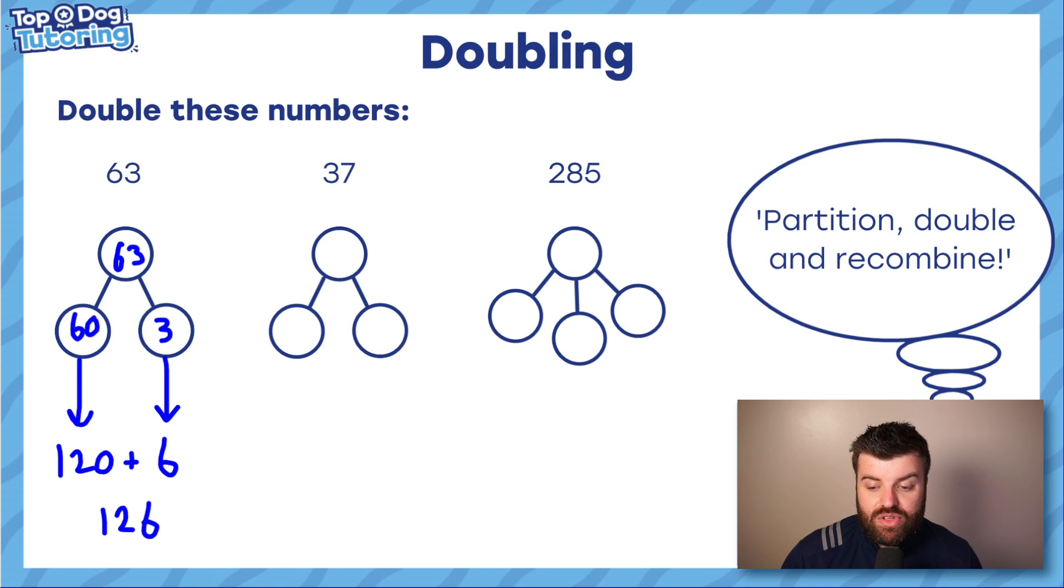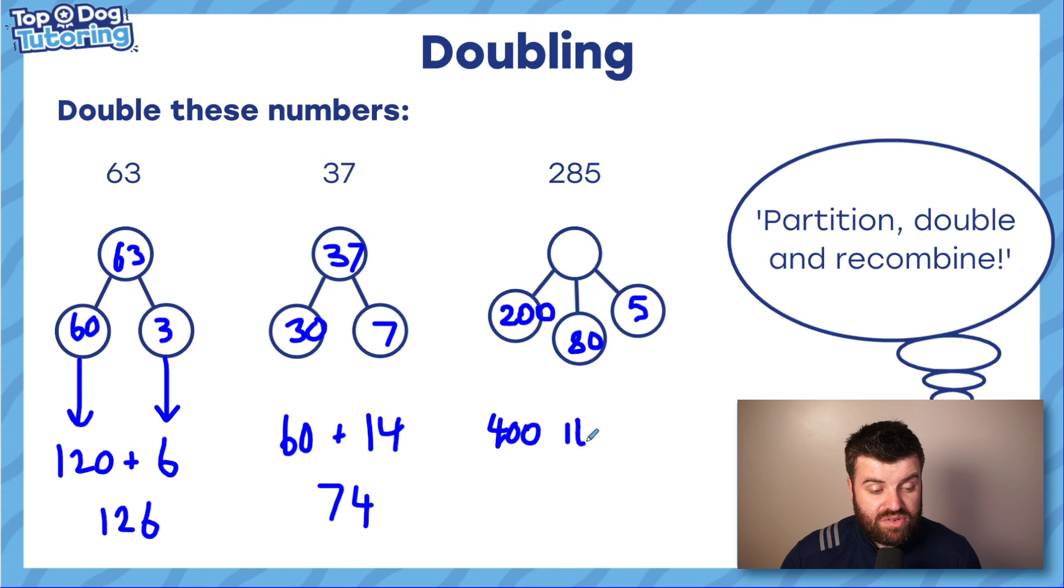Okay. So again here, 37 goes in. We have 30, we have seven. We should know these facts. That's what we need to learn. If we learn these facts, this becomes really simple. 60 plus 14, that's going to be 74. And this is what adults do when they can double in their head. I promise you, we're just breaking up the number and doubling it. So here I'm going to go straight into partitioning. We have five and 80 and 200. If we double each part, we end up with 400. We end up with 160. We end up with 10. And if we add all of those together, we get 570. It's as simple as that. If you learn your doubling facts, you can double any number using this method. Simple.